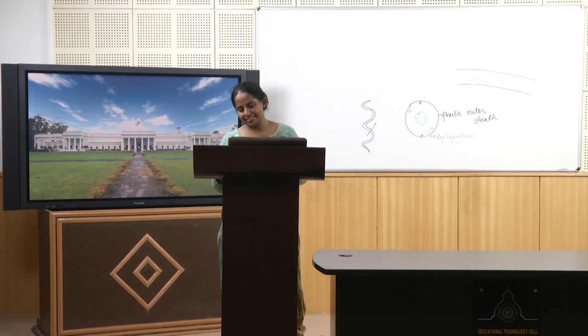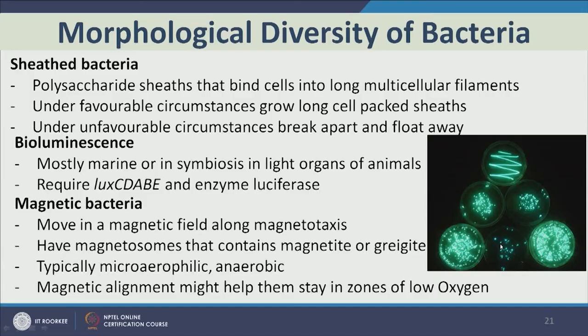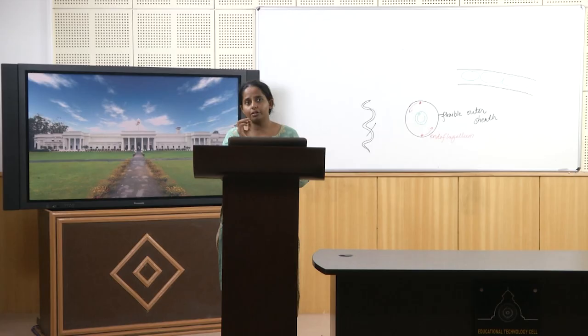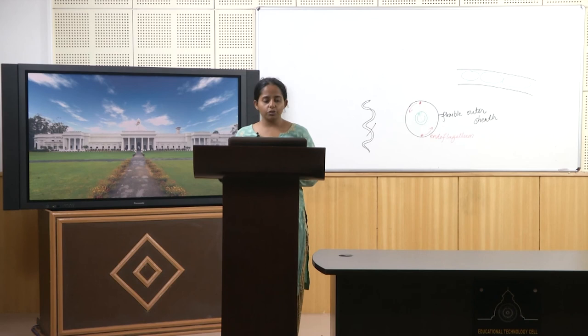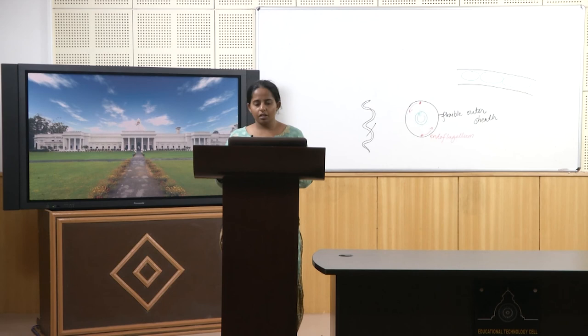Bioluminescence is really cool — these microbes glow in the dark. Most deep marine organisms and deep-sea animals require bioluminescence as a light source. In their light organs they have bioluminescent bacteria that glow using the gene LUX CDABE, which encodes for the enzyme required for glowing in the dark. We have exploited luciferase for creating marvelous technologies in microbiology.